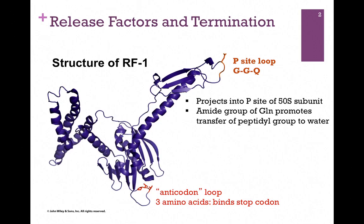Remember, there are three possible stop codons, none of which specify an amino acid. In other words, there's no tRNA that will recognize and bind to those stop codons. Instead, one of the release factors—either release factor 1 or release factor 2—will bind to that stop codon.